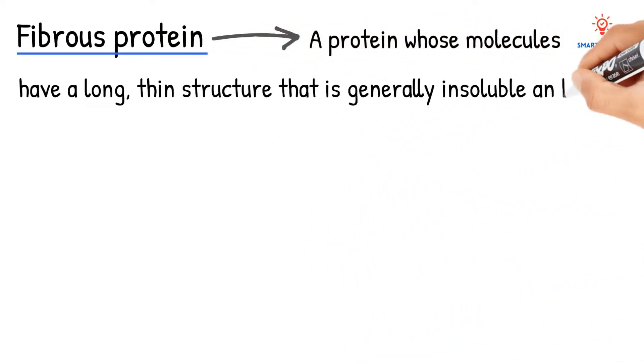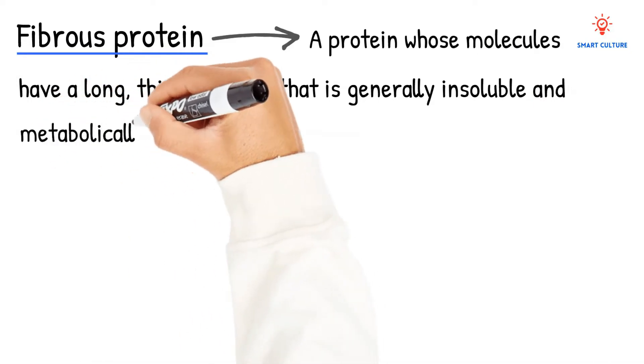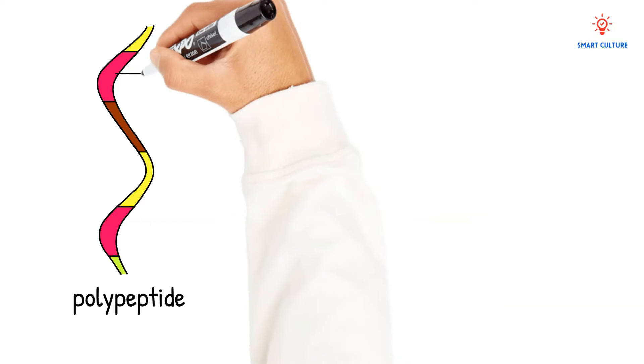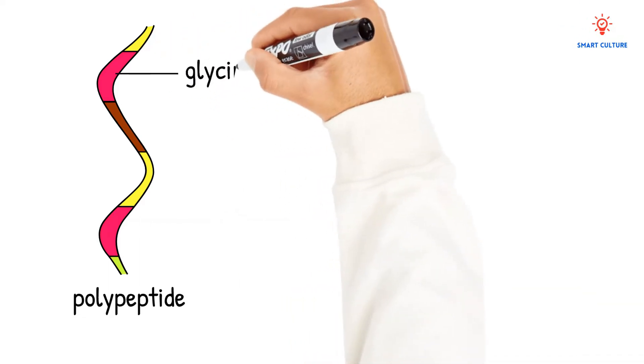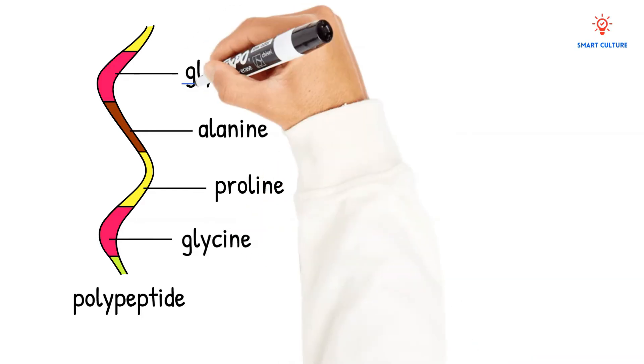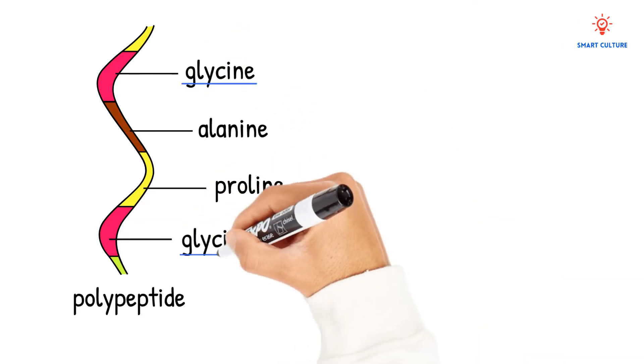Here you can see a diagram of a polypeptide, and this polypeptide is in the shape of a stretched out helix. You also notice that every third amino acid is glycine. Now three of these helices combine and wind together to form a collagen molecule.